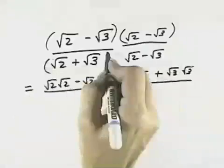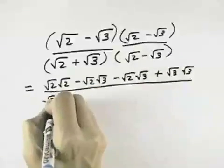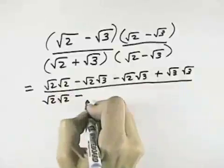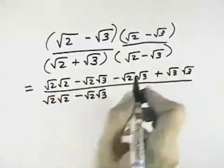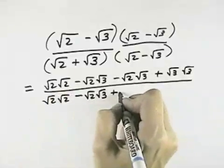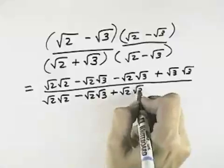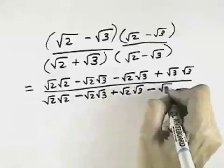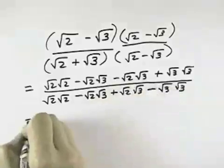In the denominator, when I multiply these, I'll have square root of 2 times square root of 2. For the outer, I'll have minus square root of 2 times square root of 3. But for the inner, I'll have the opposite sign, plus square root of 2 times square root of 3. For the last, I'll have minus square root of 3 times square root of 3.